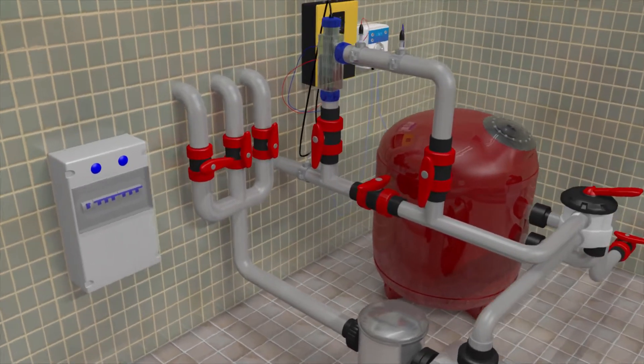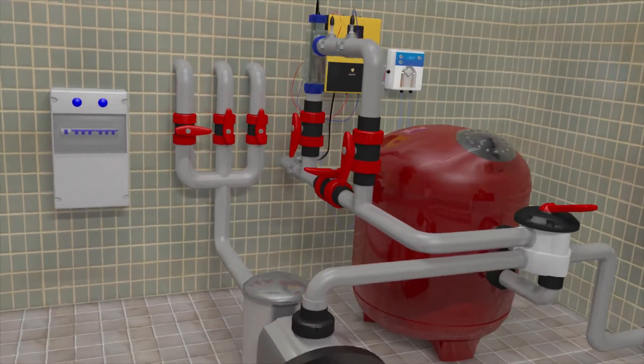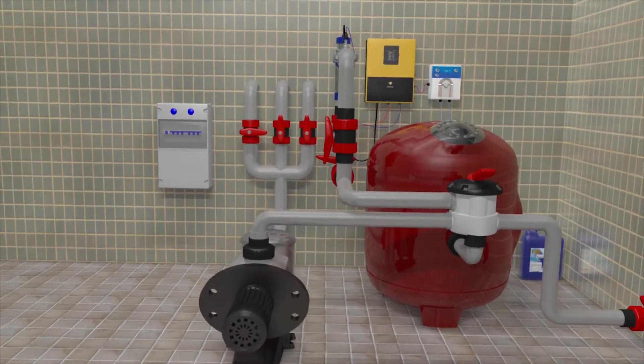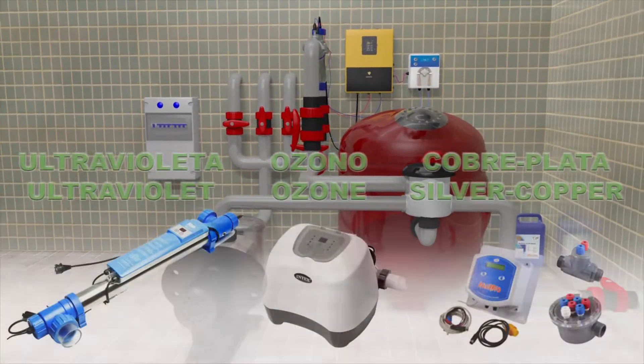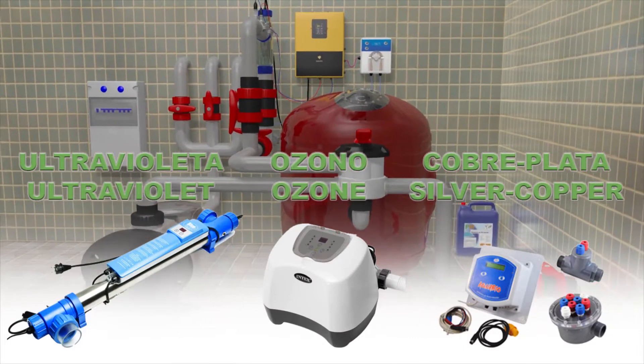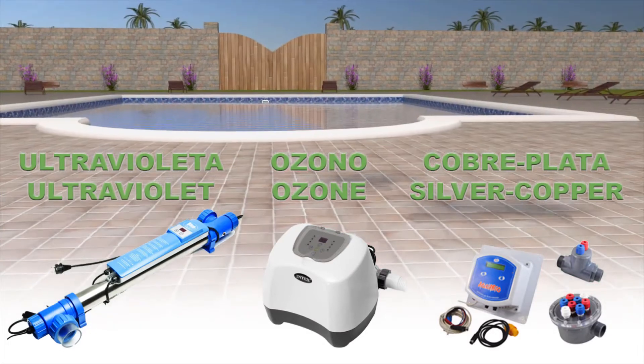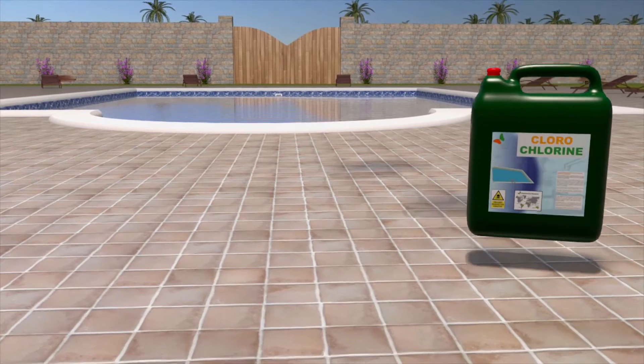To keep the water and all the other components of the pool disinfected, different oxidant products are used, as well as complementary systems such as ozone, ultraviolet and copper-silver, which we will talk about in another video.